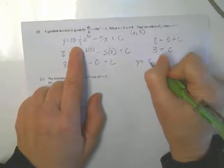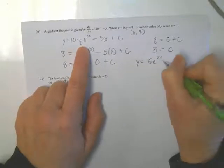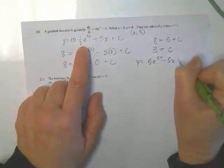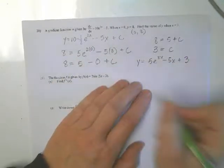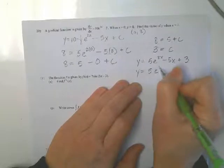This is 5 e to the 2x minus 5x plus 3. Now I want to find out what is y when x is 1. So what is y when x is 1?